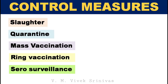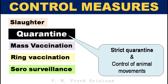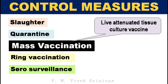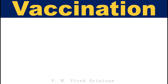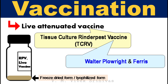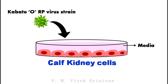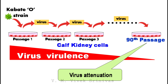Control and eradication. Overall measures followed for control and eradication in different countries include: humane slaughter of infected or exposed animals and disposal of carcasses by burning or burying; quarantine and restricted susceptible animal movement; mass vaccination using live attenuated tissue culture vaccine; ring vaccination in outbreak situations; and serosurveillance, that is serological monitoring of livestock. The live attenuated tissue culture Rinderpest vaccine, available in freeze-dried form, was developed by Dr. Walter Plowright and his colleague Ferris by attenuating the virus in calf kidney cells. They passaged the Kabete O Rinderpest virus strain, originally isolated from Africa, in calf kidney cells, and the virus was attenuated by the 90th passage. This vaccine played a great role in Rinderpest eradication.